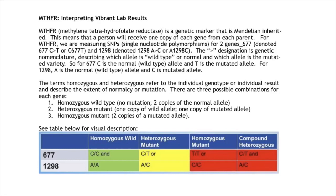For 677, the homozygous wild type is C/C, the heterozygous mutant type is C/T, and the homozygous mutant type is T/T. For 1298, the homozygous wild type is A/A, heterozygous mutant is A/C, and homozygous mutant is C/C. When both genes are heterozygous — meaning one copy of the wild and one copy of the mutated allele — we call that compound heterozygous.